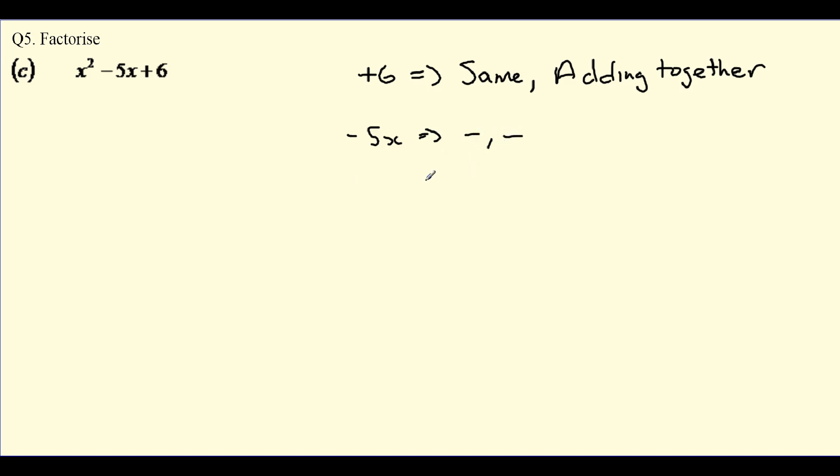So what we know about our brackets is it's something with minuses in them to get us the 5, by adding. So if we go through our options then, to make x squared, that's x and x, and to make the number 6, it could be 1 and 6, or it could be 2 and 3.